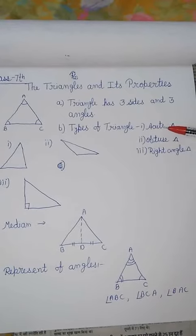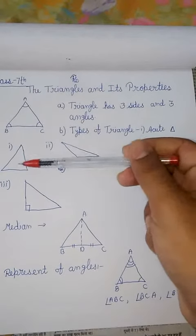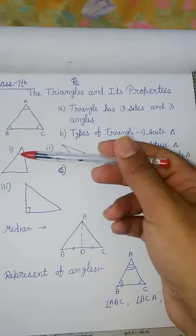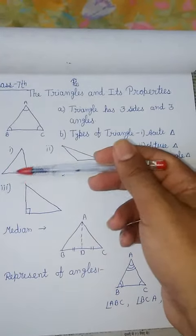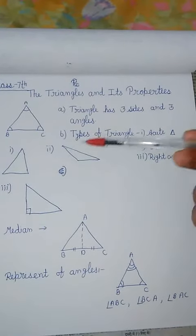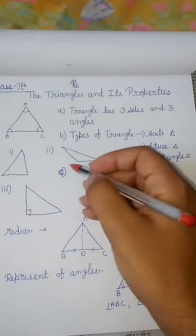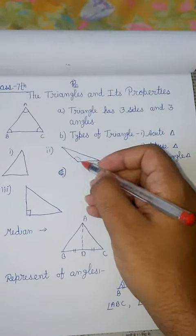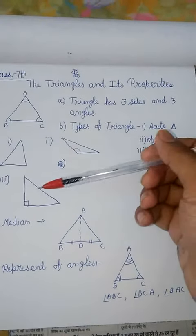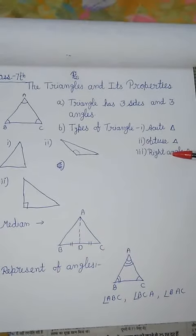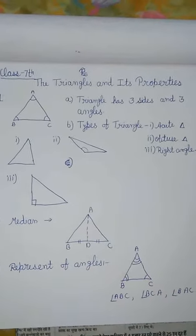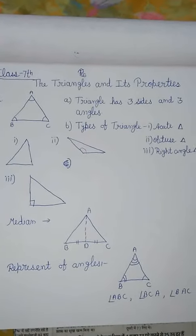Now tell me which one is acute triangle? This one, because all angles are less than 90 degrees. Obtuse triangle is this one - obtuse means at least one angle is greater than 90. Right angle triangle is this one - one angle is 90 degrees. This triangle is a right angle triangle, understand?